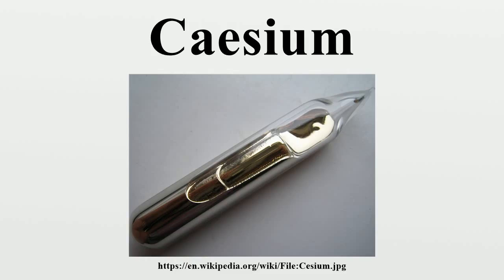Cesium is a relatively rare element, estimated to average approximately 3 parts per million in the Earth's crust. This makes it the 45th most abundant of all elements and the 36th of all metals. Nevertheless, it is more abundant than such elements as antimony, cadmium, tin, and tungsten. Due to its large ionic radius, cesium is one of the incompatible elements.